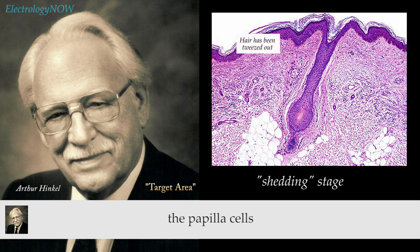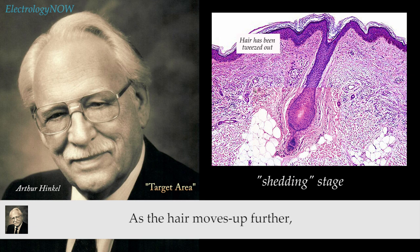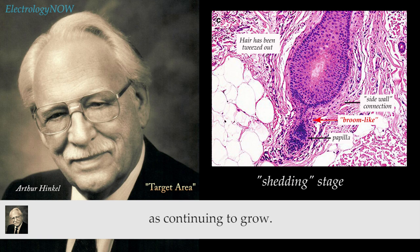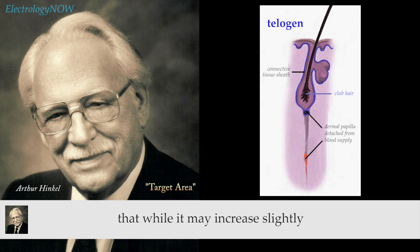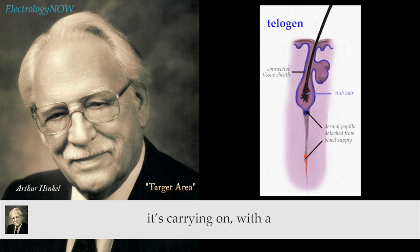As the papilla cells separate, they leave a structure wherein you have a connection from the inner root sheath to the follicle wall through a sort of a broom-like connection. As the hair moves up further, you continue to get this broom-like connection. It's only through this sidewall connection that the hair could be considered as continuing to grow — continuing with a reduced supply, since there's no longer a good blood supply from the papilla.